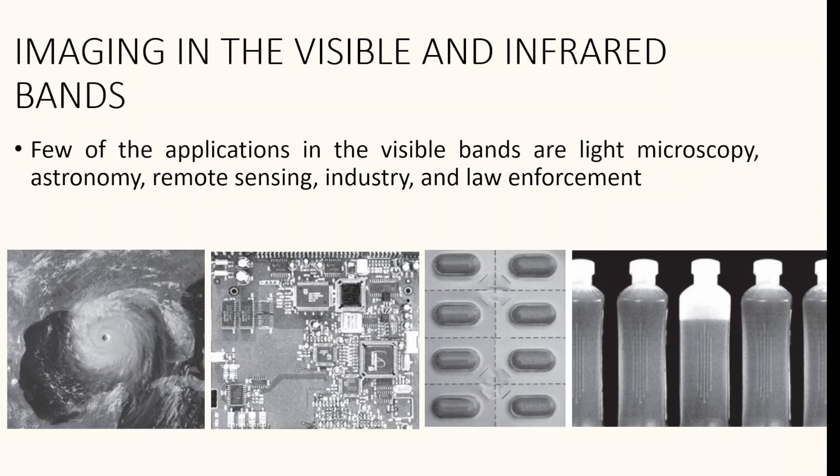Another application in the visible spectrum is automated visual inspection of manufactured goods. The second image shows the controller board of a CD-ROM drive, where image processing tasks can identify missing parts on the board. The third image shows a pill container, where machines can look for missing, incomplete, or deformed pills. The fourth image shows an application that can identify bottles not filled up to an acceptable level.